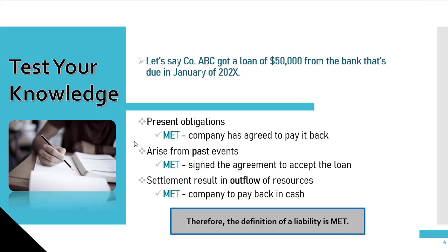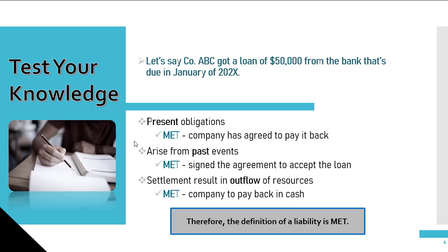Let's look at an example of a liability. Let's say company ABC got a loan of $50,000 from the bank that's due in January. This is a present obligation because the company has agreed to pay it back and this has arose from past events when the company signed the contract to accept the loan. When the company pays back the loan, there will be an outflow of resources in the form of the loan.